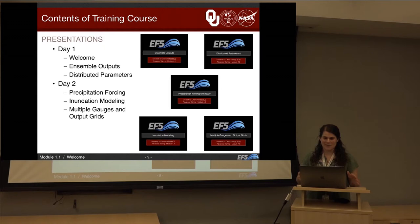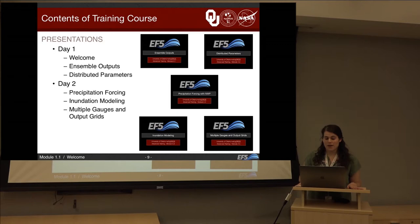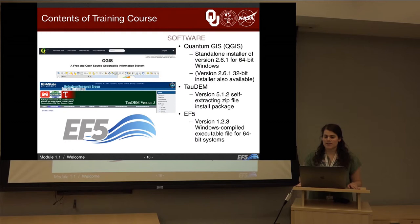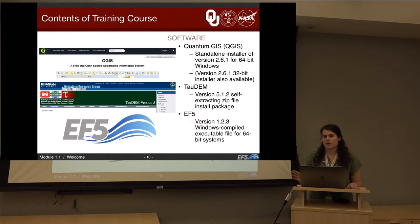This is the overall training outline. Day one covers the welcome — which is this presentation — as well as ensemble outputs and distributed parameters. Day two includes precipitation forcing with numerical weather prediction and inundation modeling. Finally, we end the advanced training course with multiple gauges and output grids. The software folder contains QGIS, TauDEM, and EF5. If you're following this after the foundation EF5 training, you should already have these downloaded; if not, you can follow this presentation or go back to the welcome video for the foundation EF5 training.